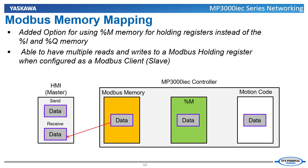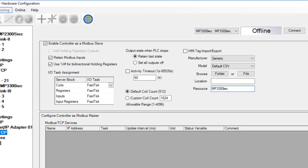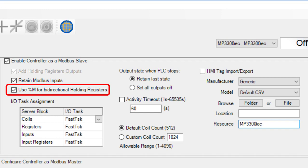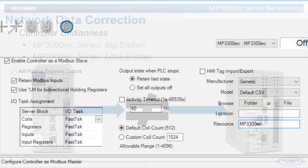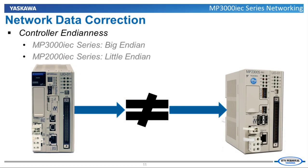This %M selection is found in hardware configuration under Modbus TCP. When sending data over a network, there is a possibility that it could be interpreted incorrectly because of processor Endianness. The MP3000 IEC series controllers use a big Endian processor. So what is big and little Endian, and why does it affect network data?